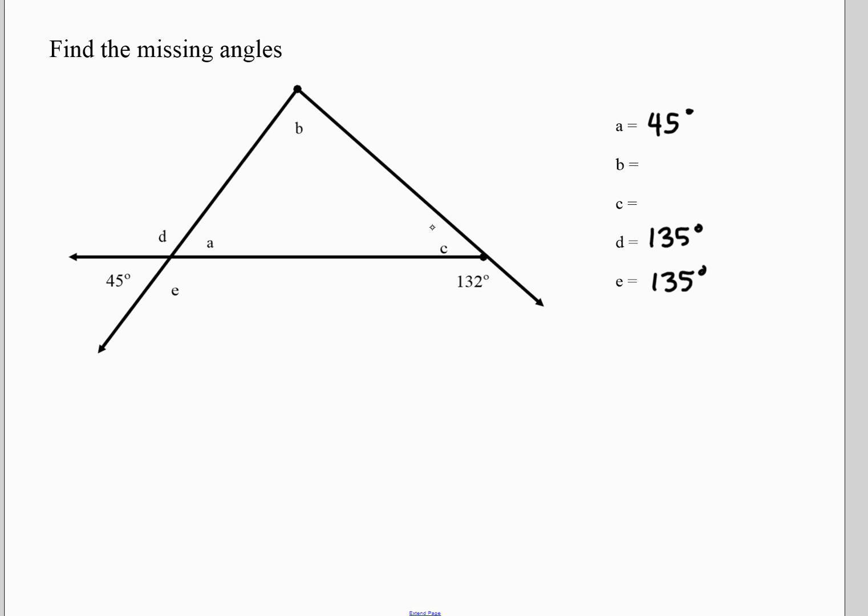Then I'd probably go here and find that C and 132 are supplementary, so I'd subtract from 180, and I would get 48 degrees for C. To get B, I've noticed that this is a triangle, and the sum of the angles in a triangle have to add up to 180. So I would do A, 45, plus C, 48, and I get 93. Then I subtract that from 180, and I would get 87 degrees for B. Here I'm applying my use of opposite angles and supplementary angles and sum of the angles in a polygon.